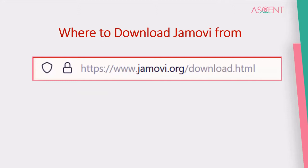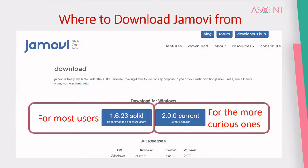To get Jamovi, you have to go to www.jamovi.org and there's a download page from which you can download Jamovi. For most users, we can go for the solid version, which is recommended as the most stable one with almost no bugs. The current version will be the latest one with the latest features, but it may not be as stable as the solid version.